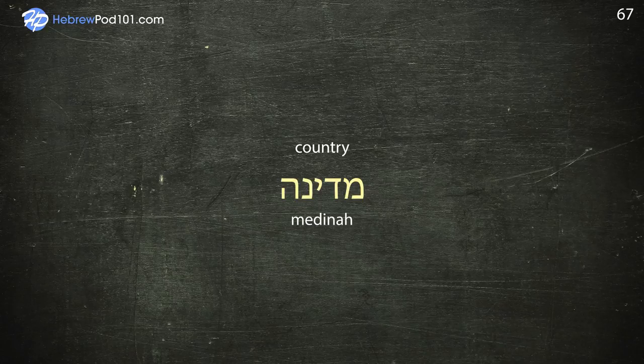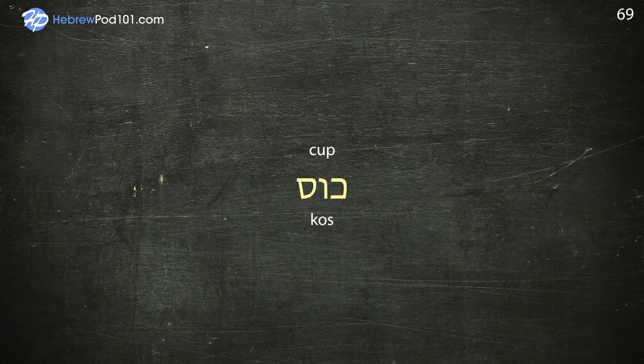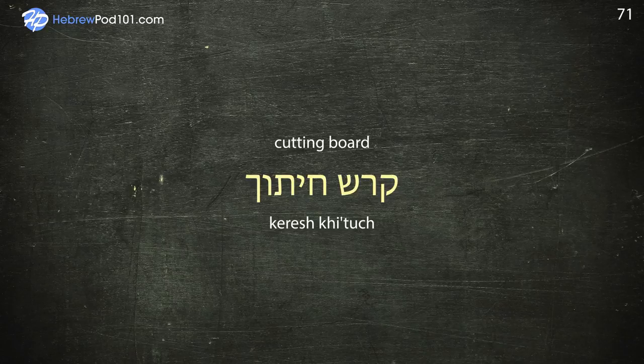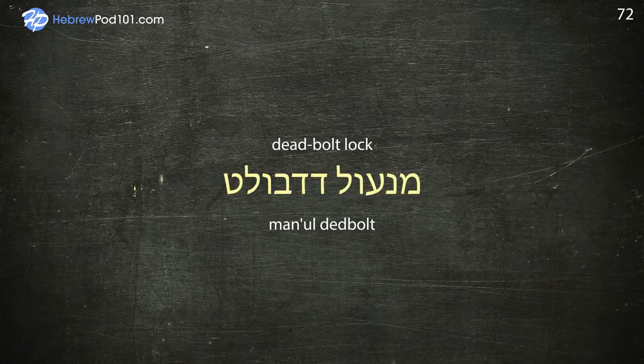Crib — Arisa. Cup — Koss. Curtain — Vilon. Cutting board — Keres Chituch. Deadbolt Lock — Man'ool.